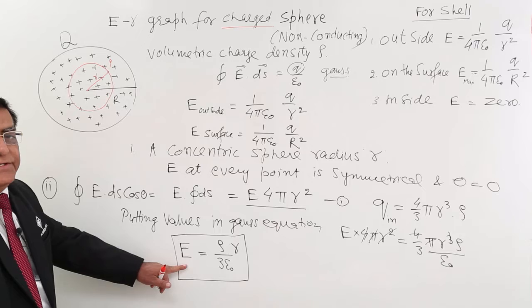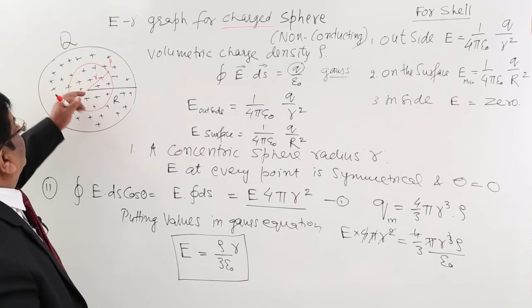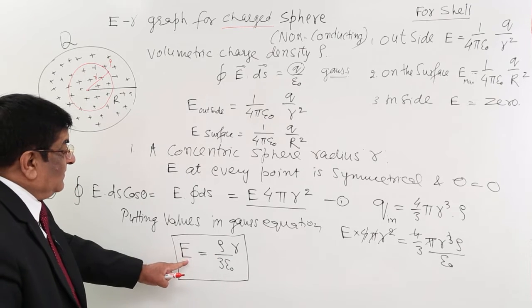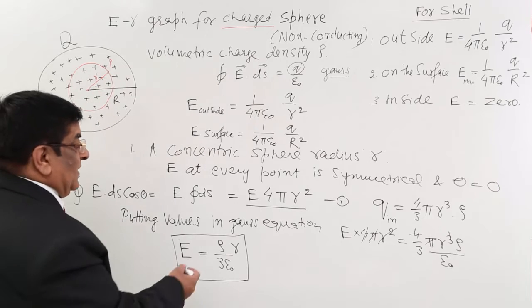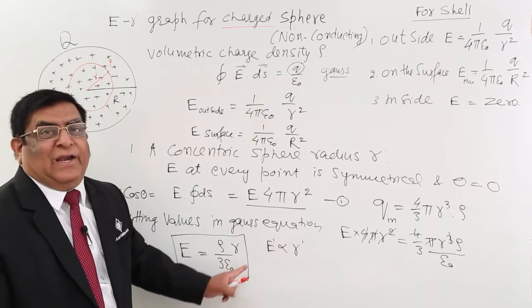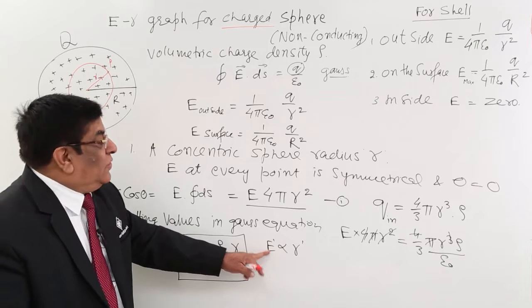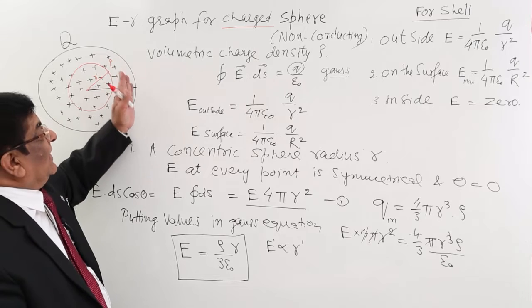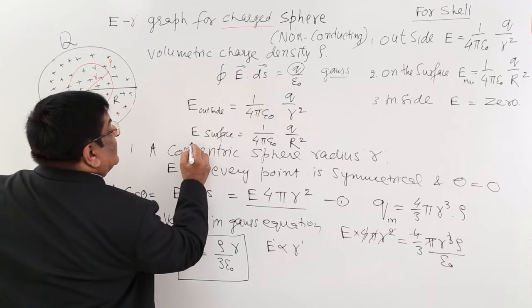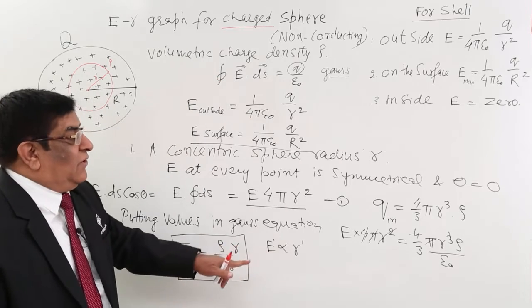Now this is a constant term or a variable term? Answer: this is a variable term. Why? R is a variable distance. If we are at 1 centimeter it has value 1. If we are at 3 centimeter it has value 3. E will change. That means E keeps on changing with distance. This gives us E is proportionate to r and both have got power 1. That means there is a linear relation between the two. If r is 2 times, E is 2 times. If r is 10 times, E is 10 times. So r increases, E goes on increasing but up to which point? Answer is up to surface.